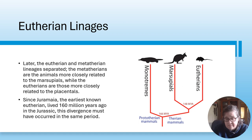The eutherian and metatherian lineages separated. The metatherians are animals more closely related to the marsupials, while the eutherians are those more closely related to placentals. Prototherian mammals include monotremes. Then there are therian mammals, and then marsupials and eutherians.